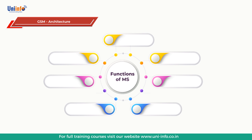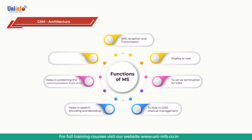Hence we can summarize the functions of MS as: 1) SMS reception and transmission; 2) display to user; 3) act as termination for GSM; 4) help in GSM channel management; 5) helps in protecting the communication from error; 7) SIM provides personal mobility to the user; 8) controls data rate.